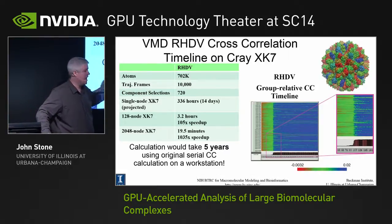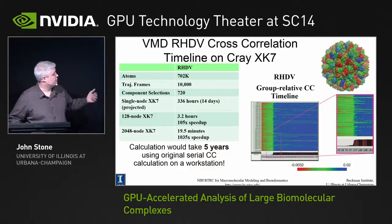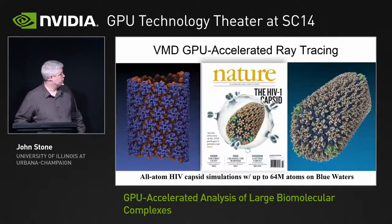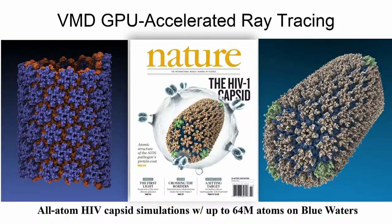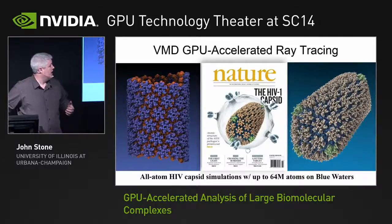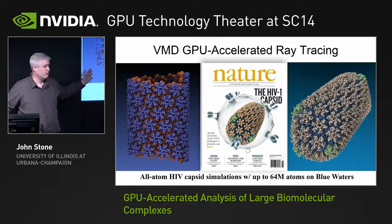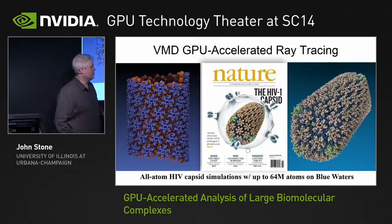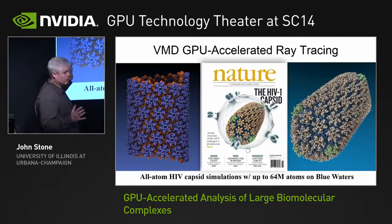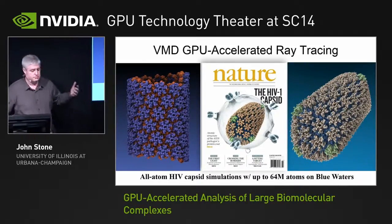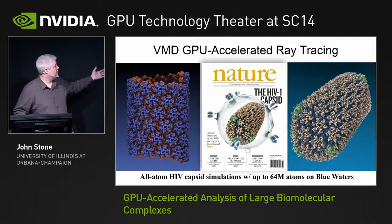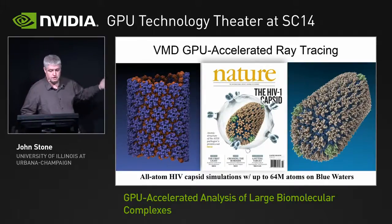We have also been working over the last year on bringing ray tracing techniques to desktop visualization and supercomputer movie rendering. I've been developing ray tracing codes for almost 20 years and we've used them for publication figures in molecular visualization throughout my career. But when working on very large structures like HIV with 64 million atoms, the scenes become tremendously large and rendering run time becomes a problem, so we wanted to find ways of speeding this up.